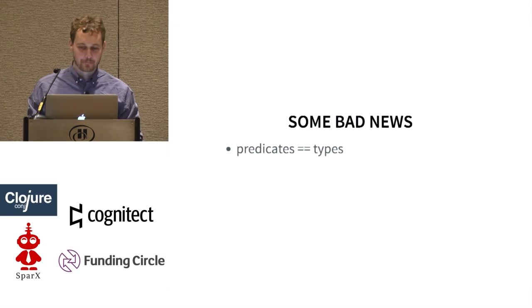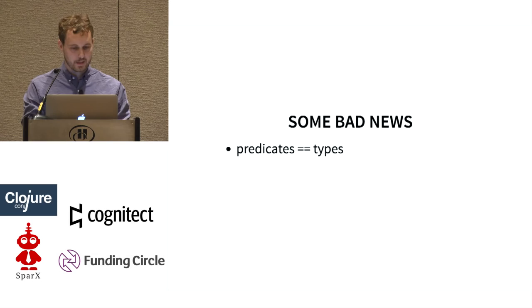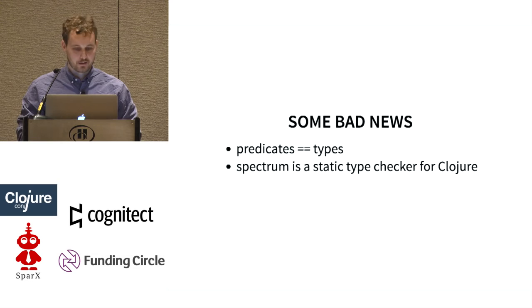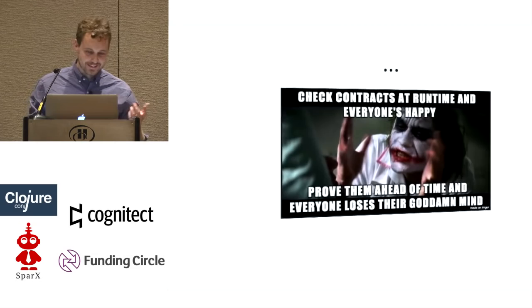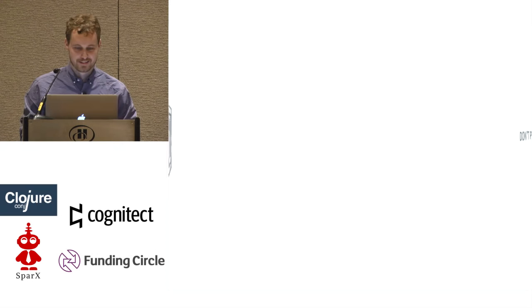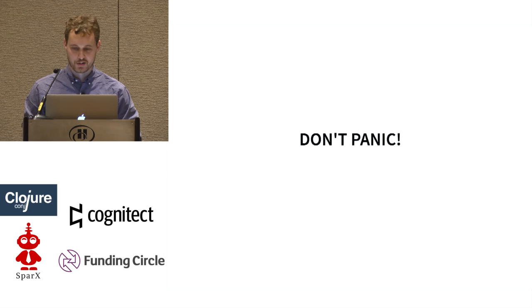I've got some bad news. Predicates are types. If you have the predicate like string, you can convert that to Java.lang.String. Spectrum is a static type checker for Clojure. Sorry, Stu. You can thank Chaz Emmerich for this wonderful meme. But don't panic — it's fine. We're going to go through why this is okay and maybe not such a terrible idea.